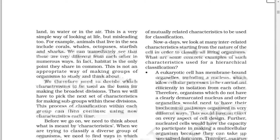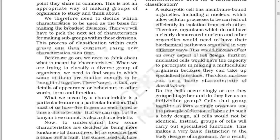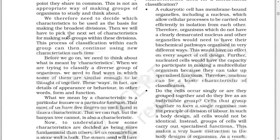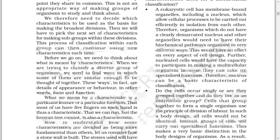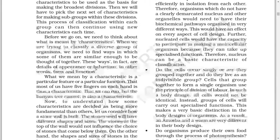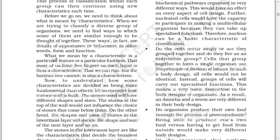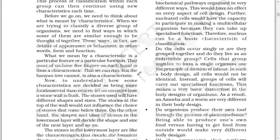This is not an appropriate way of making groups of organisms to study and think about. We therefore need to decide which characteristics to be used as the basis of making the broadest division, then pick the next set of characteristics for subgroups, and continue this process using new characteristics each time. When we are trying to classify a diverse group of organisms, we need to find ways in which some of them are similar enough to be thought of together. These ways are details of appearance or behavior — in other words, form and function. A characteristic is a particular feature or function; that most of us have five fingers on each hand is a characteristic, and that we can run but the banyan tree cannot is also a characteristic.